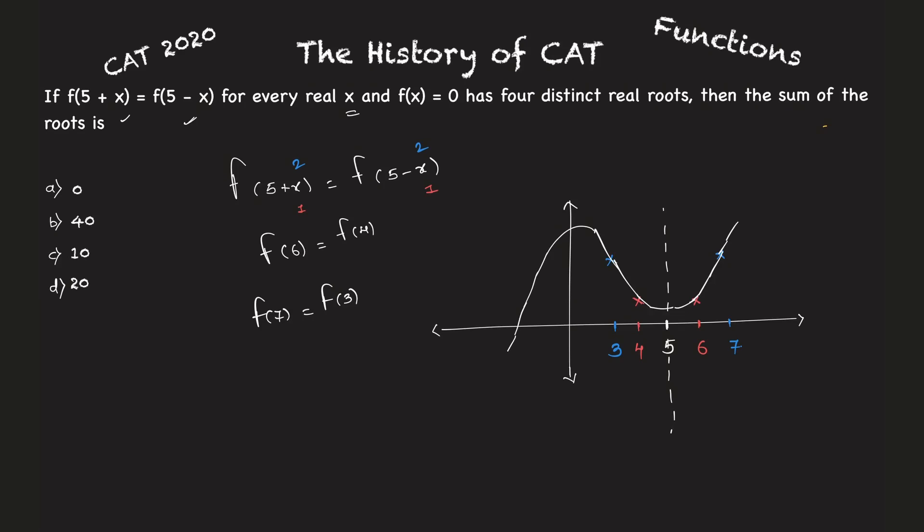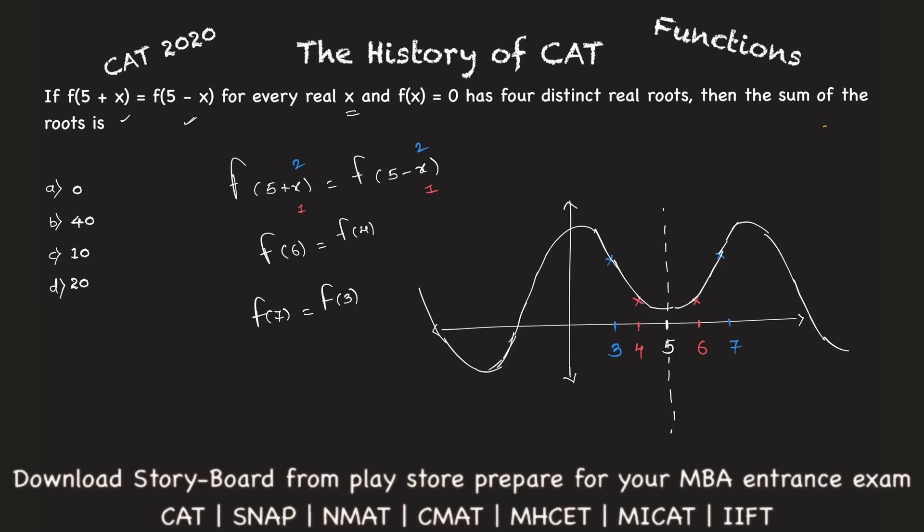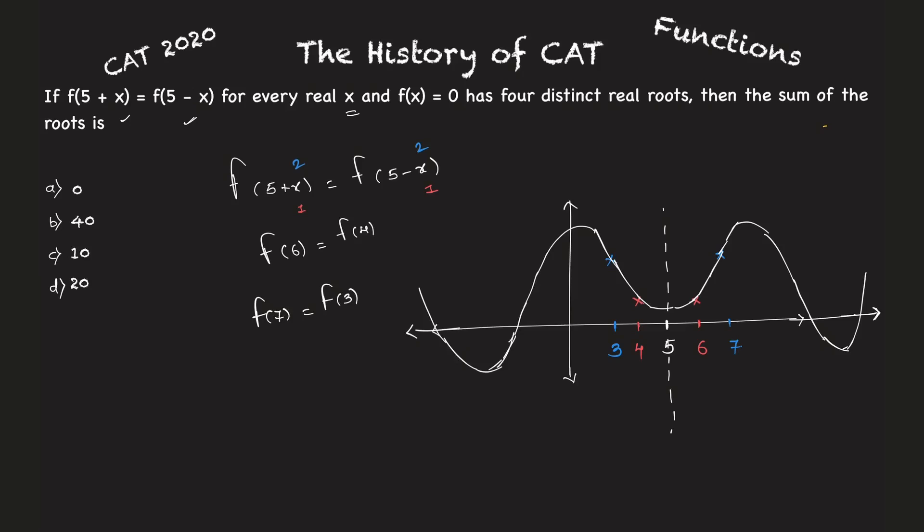So imagine how will the graph go? Somewhere like this, it will go something like this, and similarly this would go something like this, such that you will have four different roots. Root is the value of x at which function becomes, f(x) becomes equal to zero.